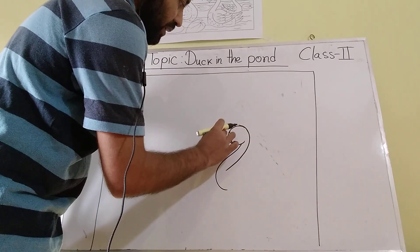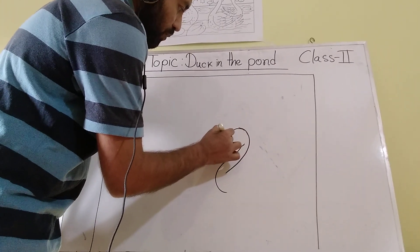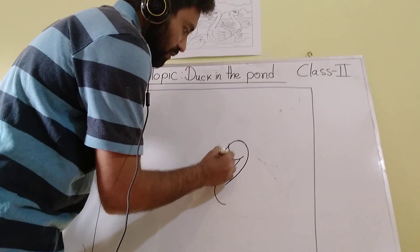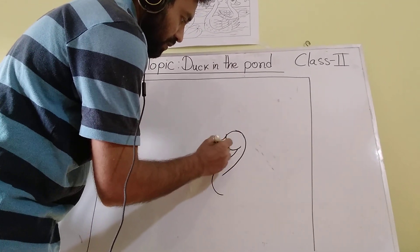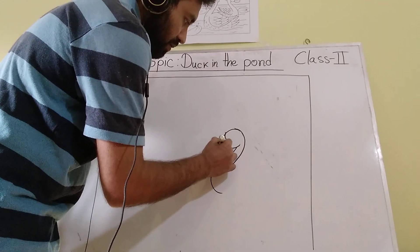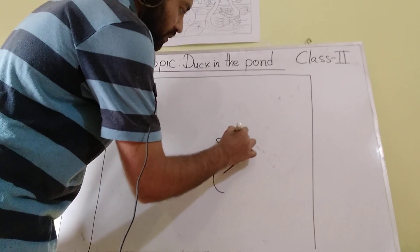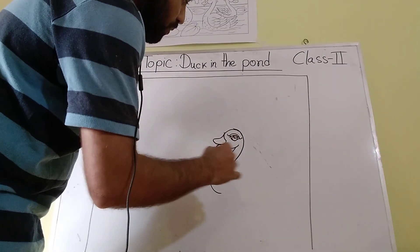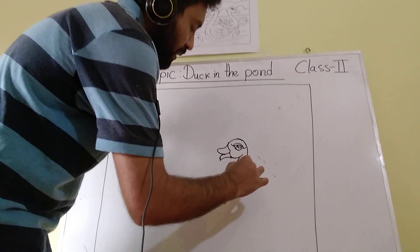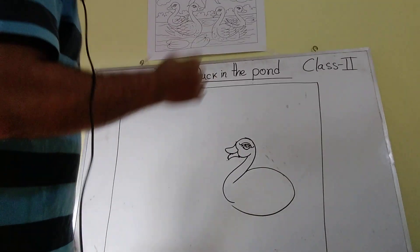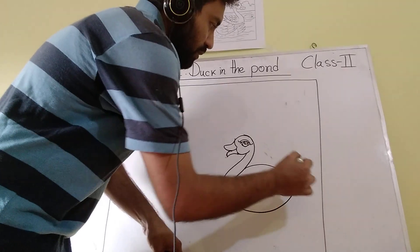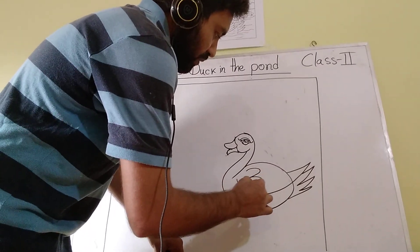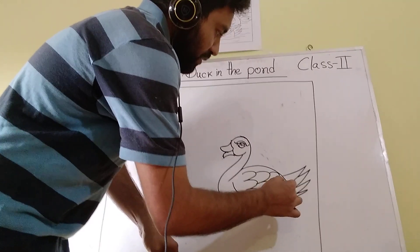And draw a three. Now we draw its beak. Make its eyes. Now we know this duck came from its egg. Now we make an egg shape. After that we make its tail. Now using some curve lines we make its tail.